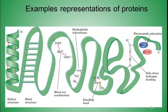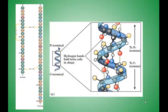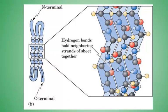Here are some more examples of how proteins are represented. In this figure, the protein is modeled as tape or ribbon. Key intermolecular attractions are noted, including the disulfide bond. Here we see the pleated sheet.